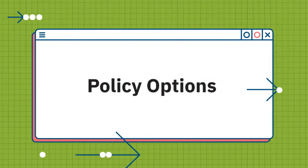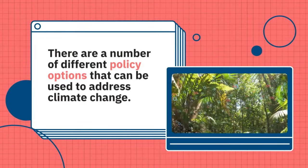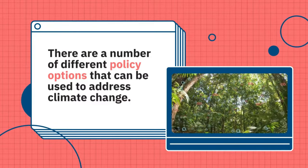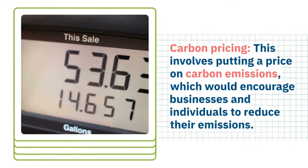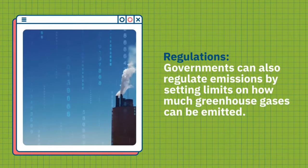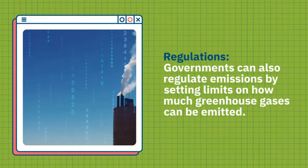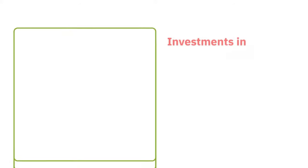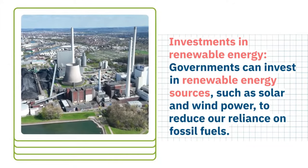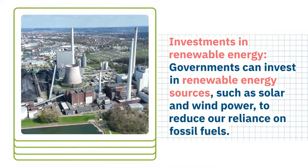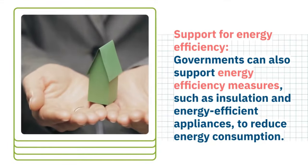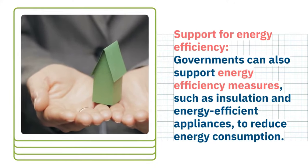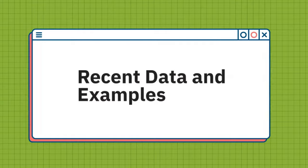Policy actions: there are a number of different policy options that could be used to address climate change. Carbon pricing involves putting a price on carbon emissions, which would encourage businesses and individuals to reduce their emissions. Regulations: governments can also regulate emissions by setting limits on how much greenhouse gas can be emitted. Investments in renewable energy: governments can invest in renewable energy such as solar and wind power to reduce our reliance on fossil fuels. Support for energy efficiency: governments can also support energy efficiency measures such as insulation and energy-efficient appliances to reduce energy consumption.